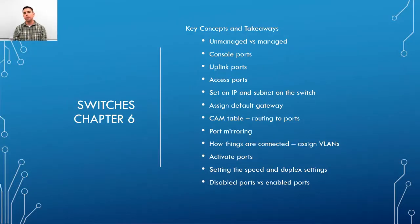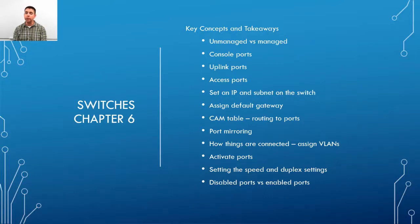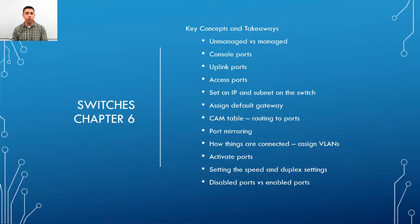An unmanaged switch is pretty much like a hub - it's a smart hub. There are still collisions and things that can happen, just not as much. It can work at full duplex, whereas a hub only works at half duplex. A managed switch allows you to control the traffic via VLANs. Because VLANs work at layer two, it's not routing, but it is providing those separate segregated collision domains.